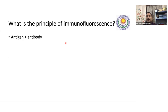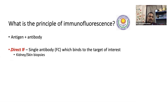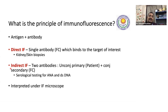What is the principle of immunofluorescence? Basically there is an antigen-antibody reaction. The antigen is already present in the biopsy — in the kidney tissue or skin tissue. We send an antibody which will go and bind to it, and this antibody is tagged with a fluorophore like FITC. There are two types of immunofluorescence: direct IF, which we use for skin and kidney biopsies, where a single antibody tagged to a fluorophore is used and goes and binds to the target.